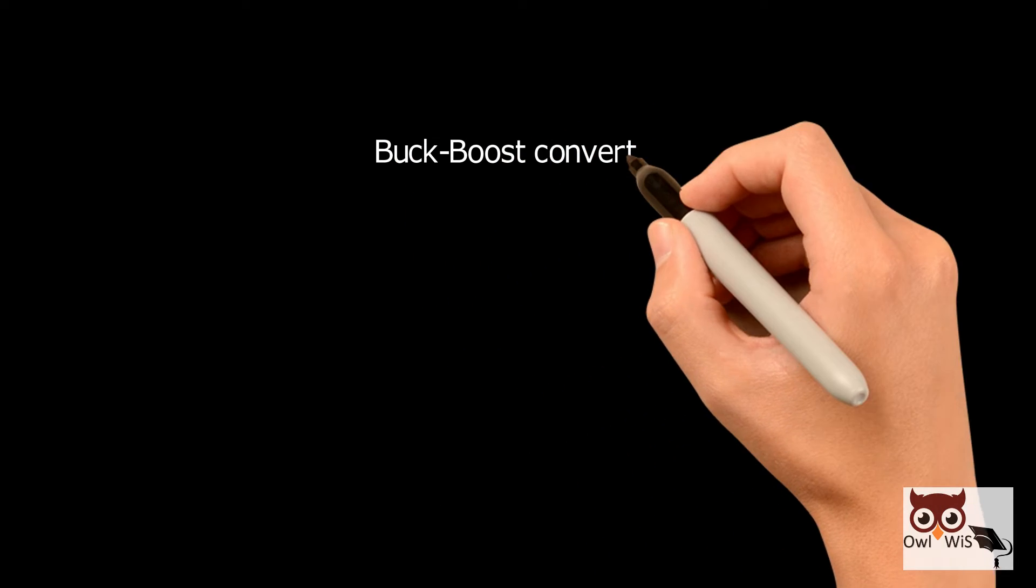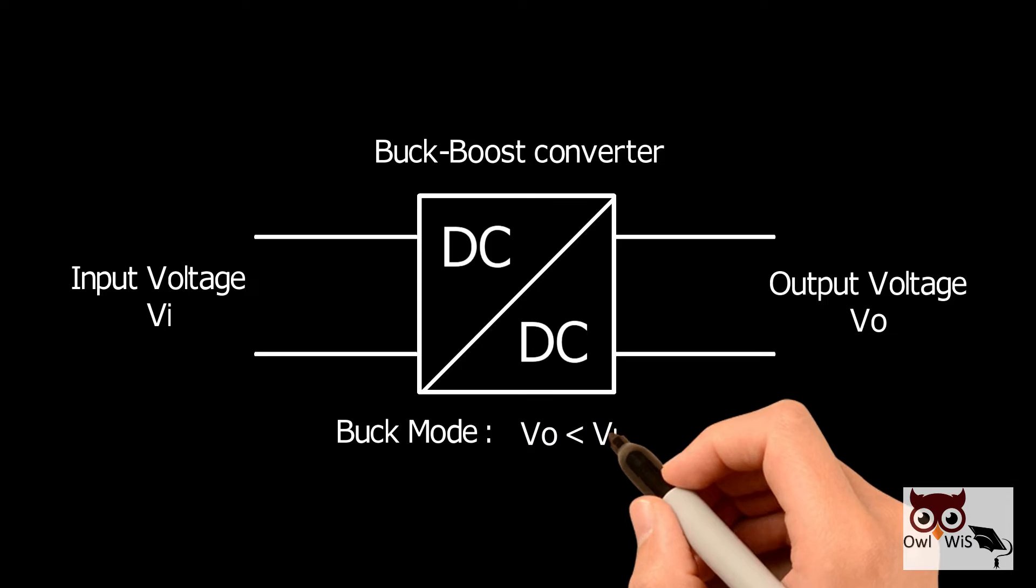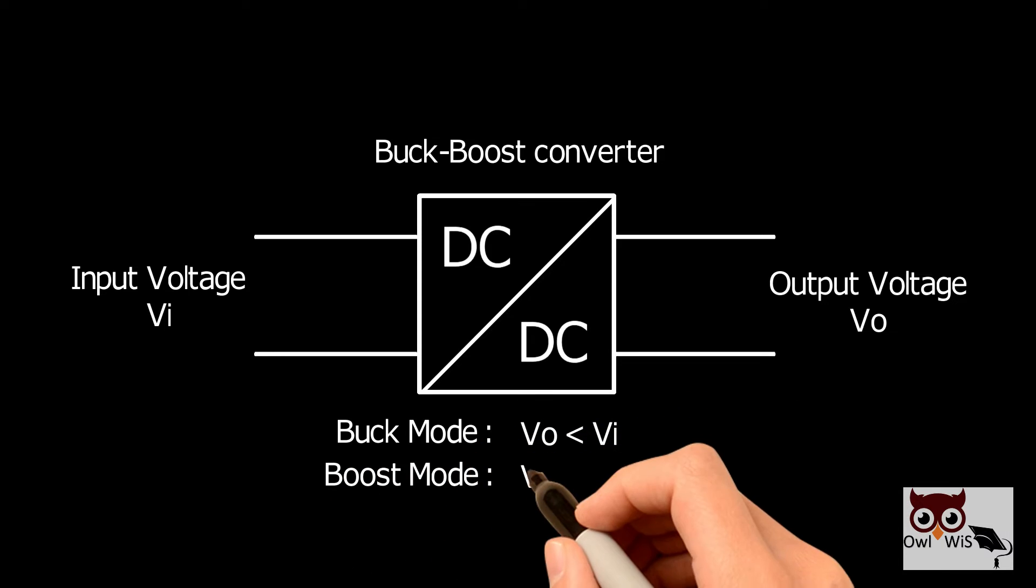A buck-boost converter combines the functions of a buck converter used for DC voltage step down and a boost converter used for DC voltage step up.